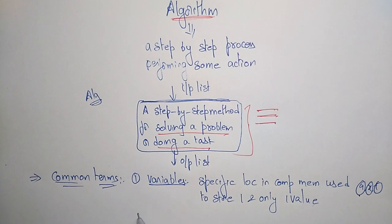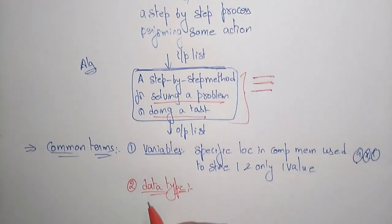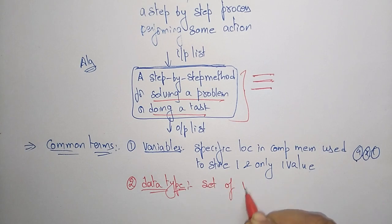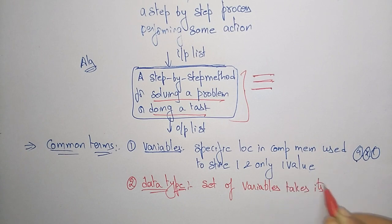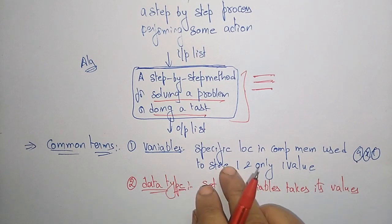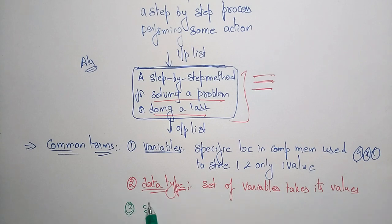The second common term used in the algorithm is data type. Data type is nothing but a set of values that a variable can take. When we declare a variable, it occupies a memory location in the computer system. Data type indicates the set of values that the variable takes.